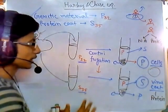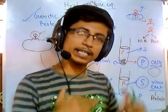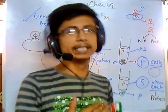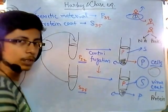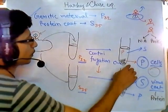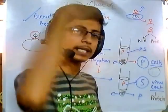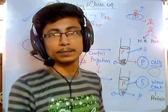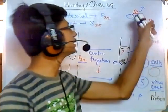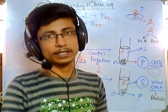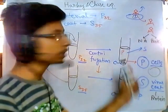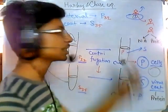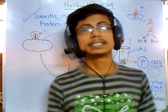It might seem complicated but the core idea is very simple. The experiment checks whether radioactivity appears in the pellet or the supernatant. After tagging with P32 phosphorus, the radioactivity appeared in the pellet — meaning the material moved inside the bacterial cell. What goes inside the bacterial cell is DNA. Since no such radioactivity was found in the supernatant, this is the Hershey-Chase experiment, proving that DNA is the genetic element.